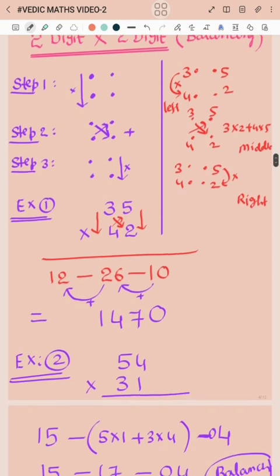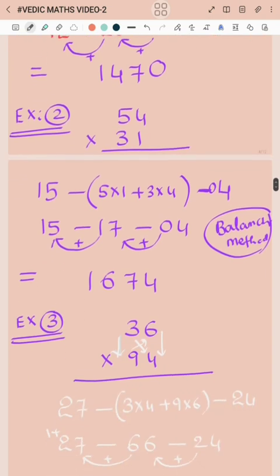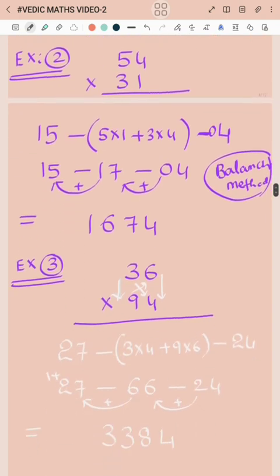Example 2: 54 into 31. Step 1, multiply left side. Step 2, multiply corners and add. Step 3, multiply right side numbers. Then complete the procedure using balancing method.